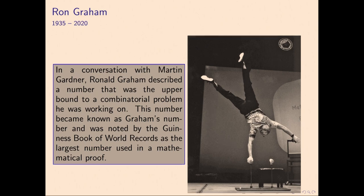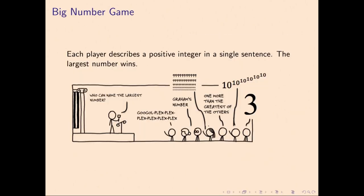I will always remember my conversations with Ron Graham. He was famous for many things, including a one-armed handstand, but also a number that was named after him that came up in conversation with Martin Gardner about a combinatorial problem he was working on. I'm going to look at ways of defining large numbers that go way beyond what Graham's number looks like.